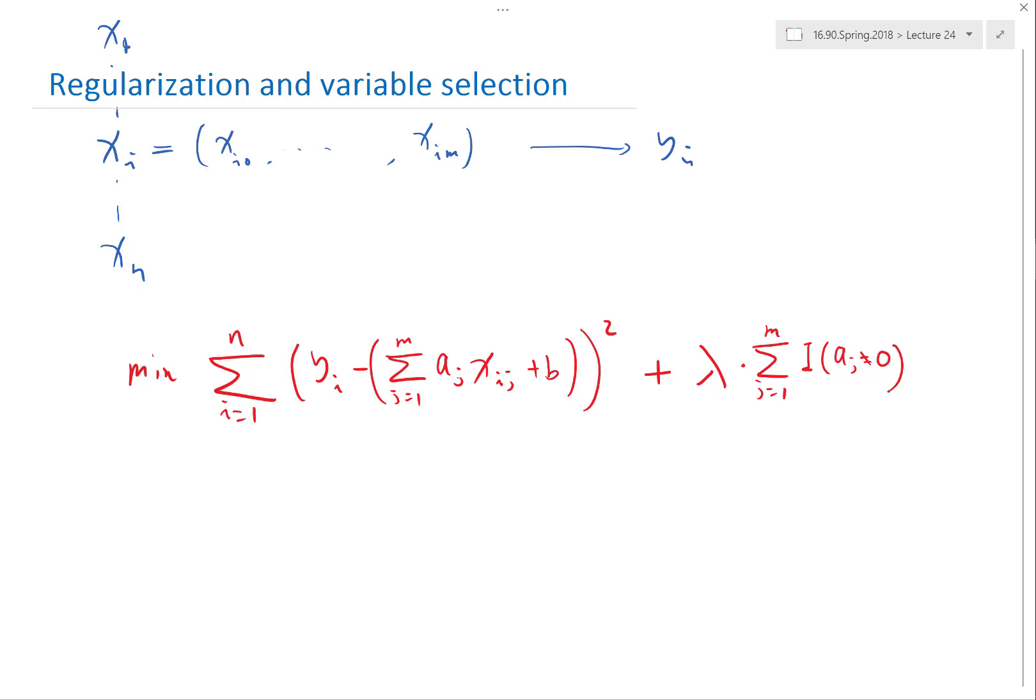Good question. Lambda is a parameter we choose. It's usually called the strength of the regularization, and how to choose that belongs to the next slide. That's called cross-validation.